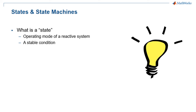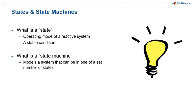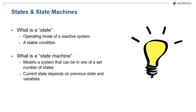I also mentioned state machines — what are those? A state machine is a model of a system that can be in one of a set number of states, where the state it is currently in depends on its previous state and variables. To understand this, let's go back to our example of a light. A light has only two steady states: off or on. Imagine that a light is on. When you flip the switch, the light turns off because its previous state was on and the switch was flipped, causing the transition from on to off.